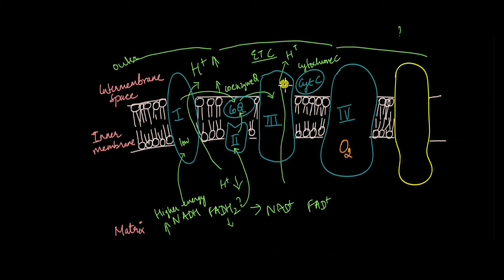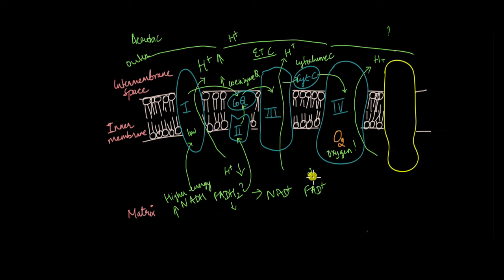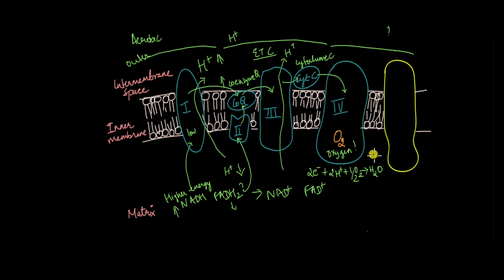From complex 3, the electrons are picked up by cytochrome C, which then donates the electrons to complex 4. Complex 4 finally contains oxygen — we finally see oxygen in aerobic respiration. Oxygen acts as the final electron acceptor in the electron transport chain, and as it accepts two electrons and two protons, one atom of oxygen (written as half O2) gives rise to water, which is a byproduct of cellular respiration. As electrons are transferred to complex 4 from cytochrome C and oxygen receives the electrons, more protons are pumped to the intermembrane space.